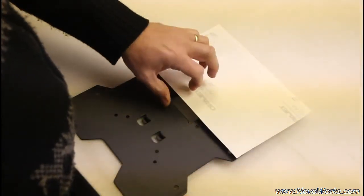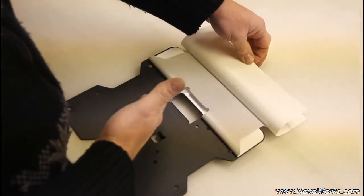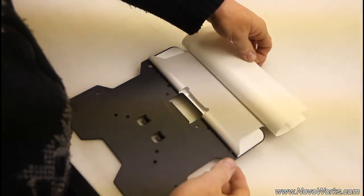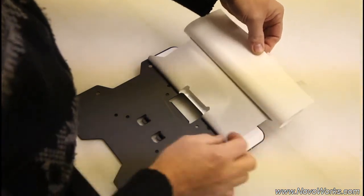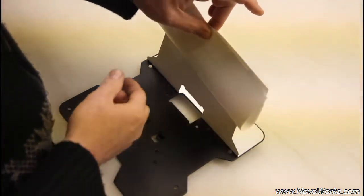And then I'm going to peel back some more paper. Now you could peel it all, but it's a lot to handle on larger applications. So normally I just peel halfway, and then I'll fold it back over under tension.